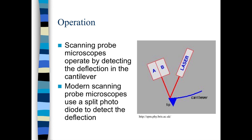The operation of the scanning probe microscope is simple. Both microscopes have a probe which is made of silicon or silicon nitride. The modern scanning probe microscope has a photodetector which converts the signal from the deflected laser beams.